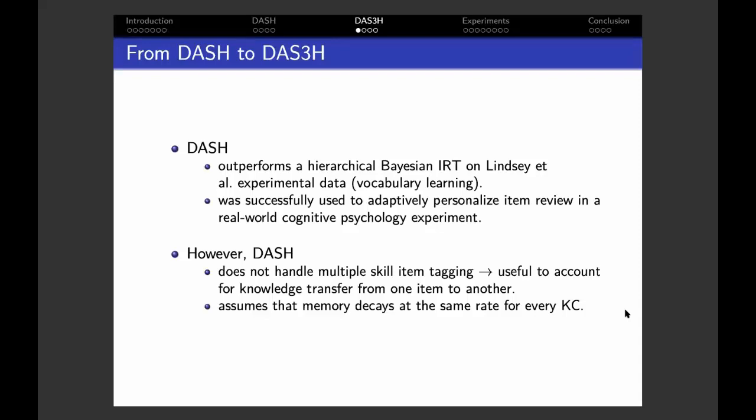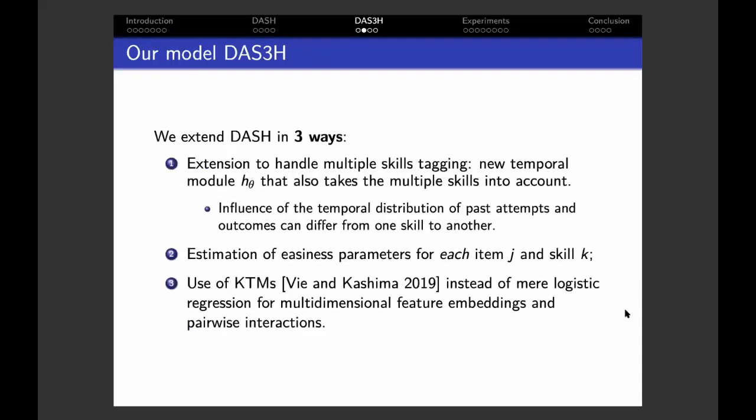Thus, we extended DASH in three ways. We modified the h_theta temporal module to take multiple skills into account and allow the influence of past study history on future correctness probability to differ from one skill to another. Second, our model DAS3H estimates easiness or difficulty parameters not only for each item j but also for every skill k. And finally, we used the recently proposed knowledge tracing machines framework from Vie and Kashima instead of mere logistic regression to get a richer model.